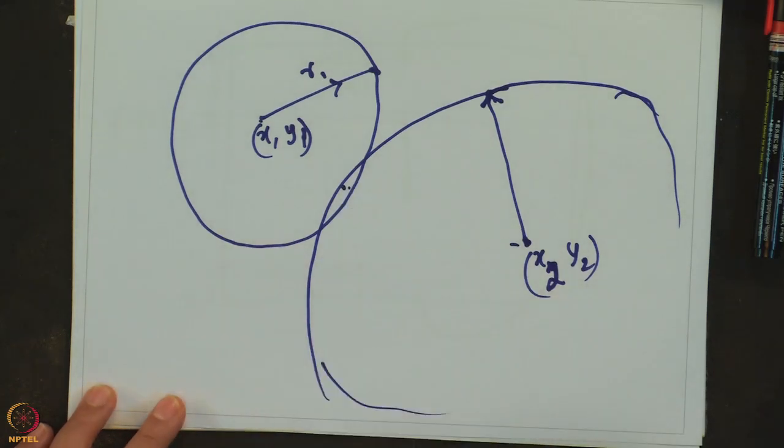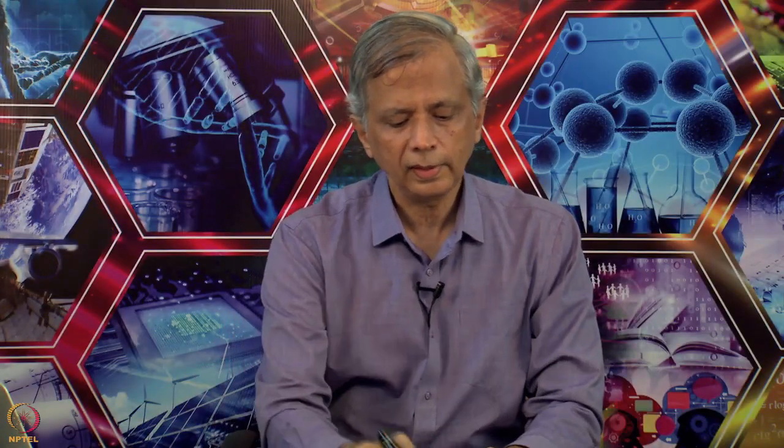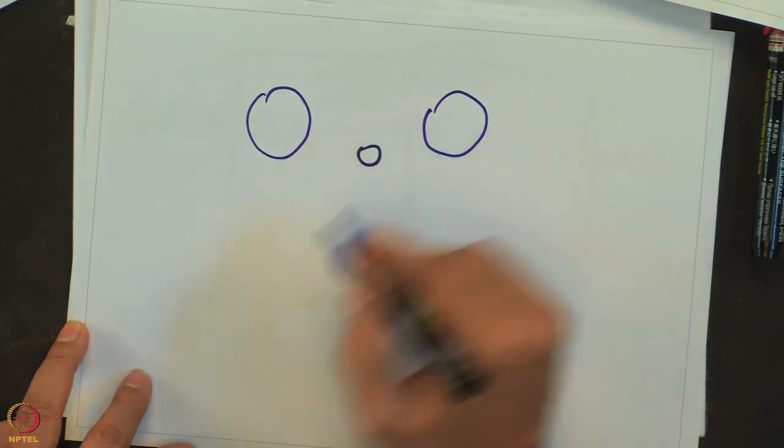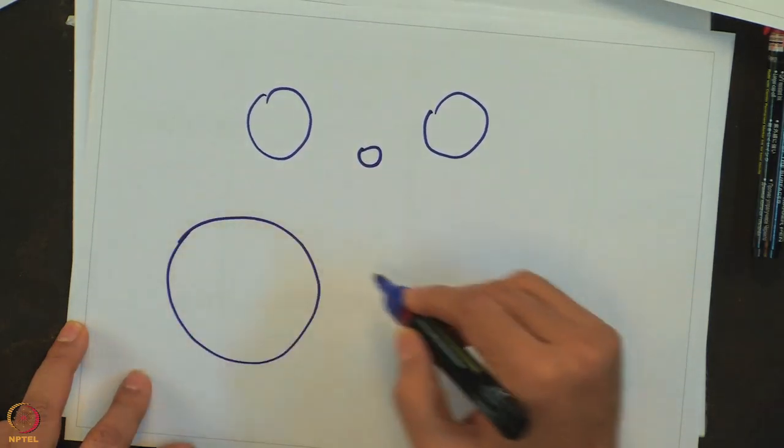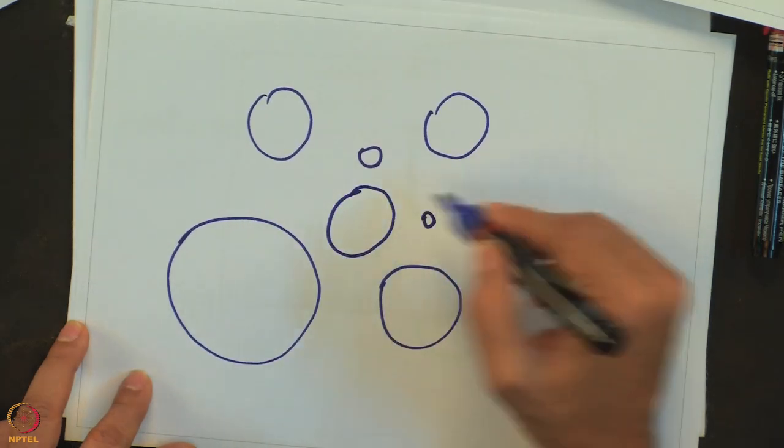So in this case if this happens for any pair of disks then we are supposed to print an answer 1. On the other hand, if all the pairs, if all the circles are completely different, they do not intersect at all. So maybe they look something like this, they could be really small.